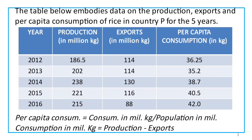The 2nd year values are 18 and 16. We will discuss the concept of per capita consumption. Consumption is divided by population. What is consumption? Consumption divided by total population. Consumption in million kilograms is equal to production minus exports.